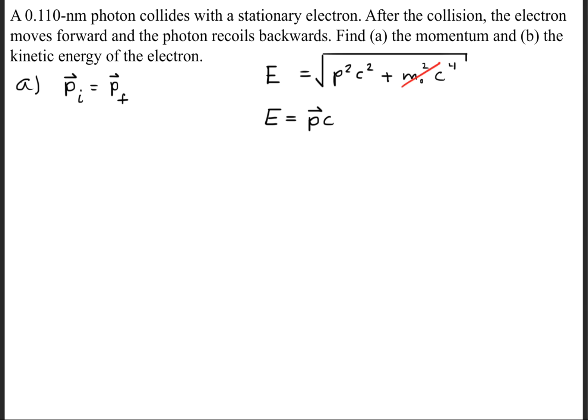Now, if we want to find the momentum, we simply divide the speed of light on both sides. We also note that the energy of a photon is simply Planck's constant times the speed of light divided by the wavelength. And we'll notice here that the speed of light cancels out on both sides, and we get that the momentum for a photon is simply Planck's constant divided by the wavelength.